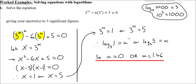The first solution x equals 0 is fairly obvious to verify: 3^0 is 1, and 1 minus 6 times 1 plus 5 equals 0. Those are our two solutions: x equals 0 and x equals 1.46 to three significant figures.